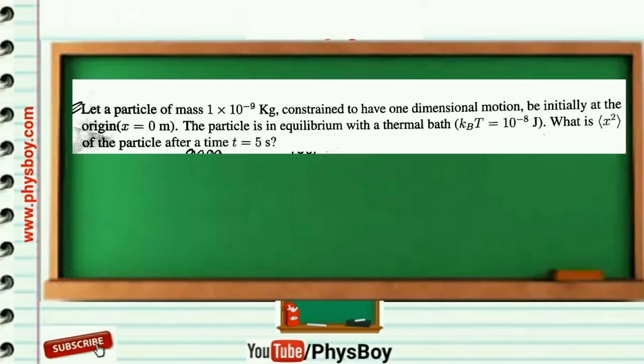Let me start with this question: let a particle of mass 10⁻⁹ kg, constrained to move in one-dimensional motion, be initially at the origin x = 0 meter. The particle is in equilibrium with a thermal bath where k_B T = 10⁻⁸ joule. You have to find the average of x² of the particle after a time t = 5 seconds.